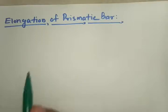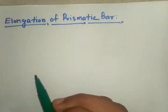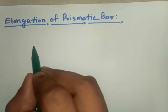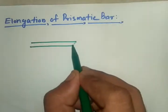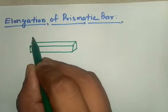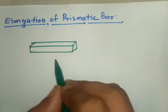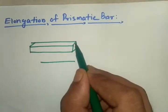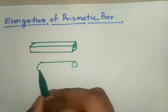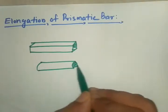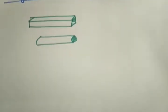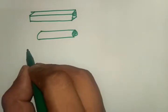In this tutorial we will be dealing with the elongation of a prismatic bar. A prismatic bar is a bar having the same width or the same cross-sectional area throughout its length. This is called the prismatic bar — it has the same area throughout the length, the same diameter throughout the length. All of these are prismatic bars.